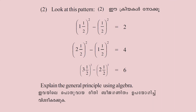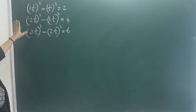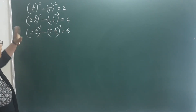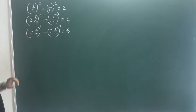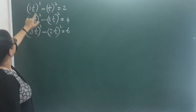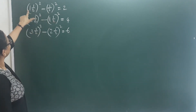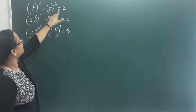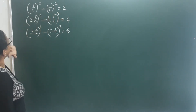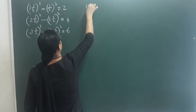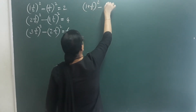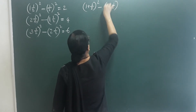Next question: Look at this pattern. Explain the general principle using algebra. We need to know how to explain this algebra. We look at 1 and a half — I subtract this one. That means 1 and a half equals 1 plus half squared minus 1 minus half squared.